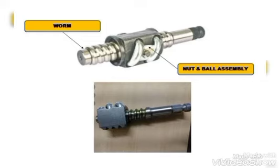The worm and nut and ball assembly work together. The movement of the nut and ball assembly is a translatory motion, which is a straight line motion.